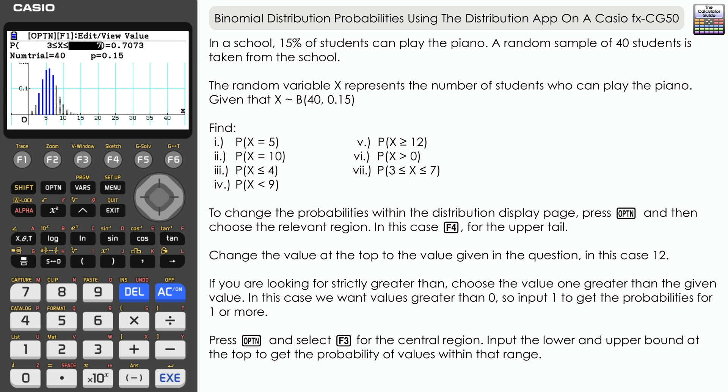How we can use the distribution app on the Casio FX-CG50 to find probabilities using the binomial distribution. Lots of different types of probability that we can find within this app. Don't forget to like and subscribe for future videos, but that's it for this video. Thank you very much for watching and I shall see you next time on The Calculator Guide.